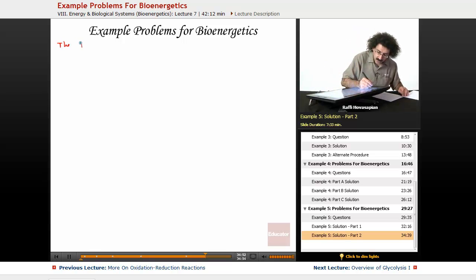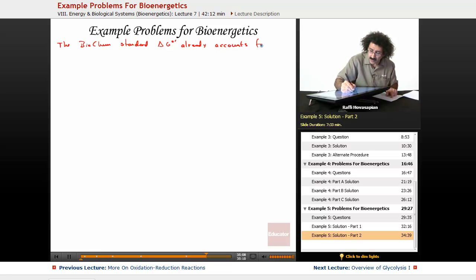Now the biochem standard for delta G already accounts for a hydrogen ion concentration equal to 10 to the minus 7 molar.